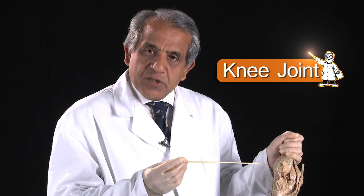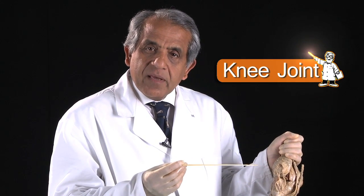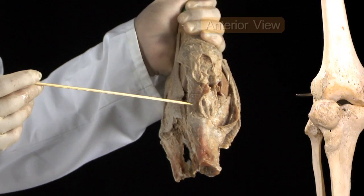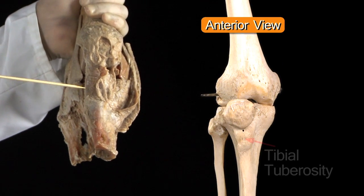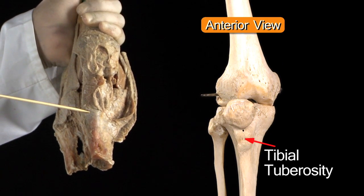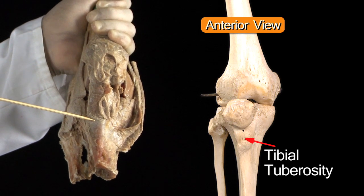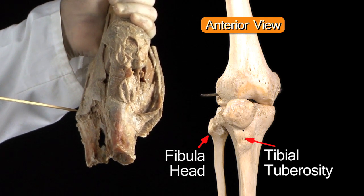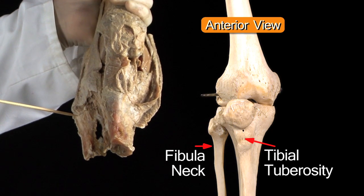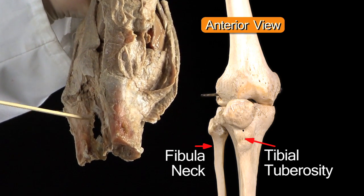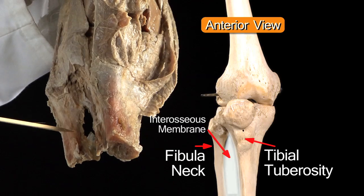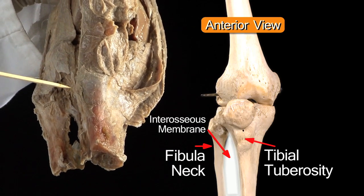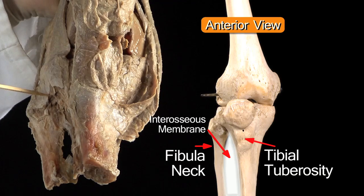This is the right knee joint. Let me help you orientate yourselves to this specimen. This is the tibial tuberosity on the anterior aspect of the upper end of the tibia, and there is the head of the fibula and below that the neck of the fibula. Between the two you can see bits of the interosseous membrane. So that's the anterior aspect of the upper end of the tibia and fibula.